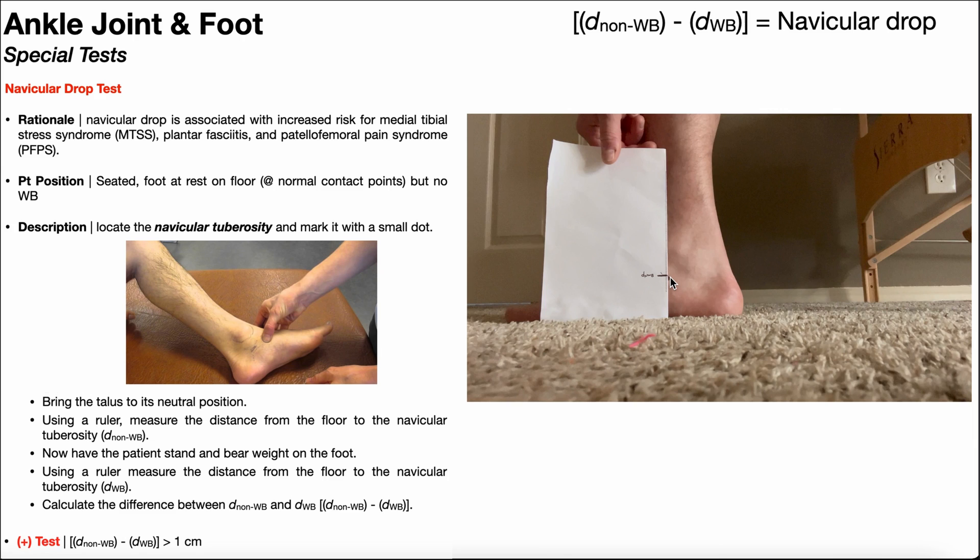Number one, you can take out a ruler and get a direct measurement from the floor to the navicular tuberosity. And you would need to write that number down. We're going to term that the non-weight-bearing distance.